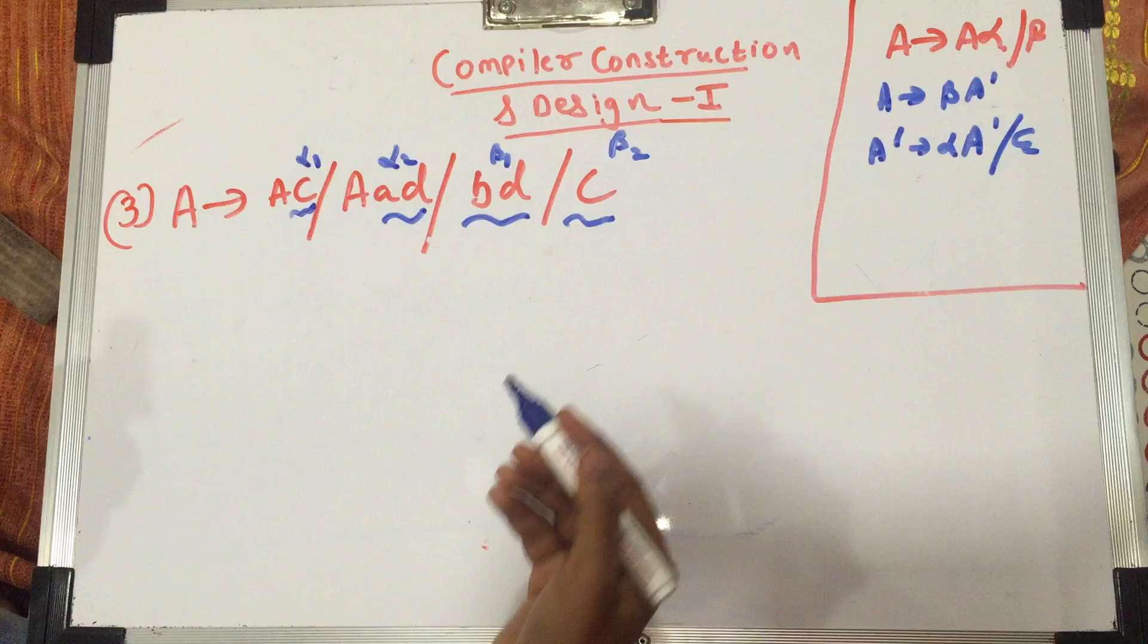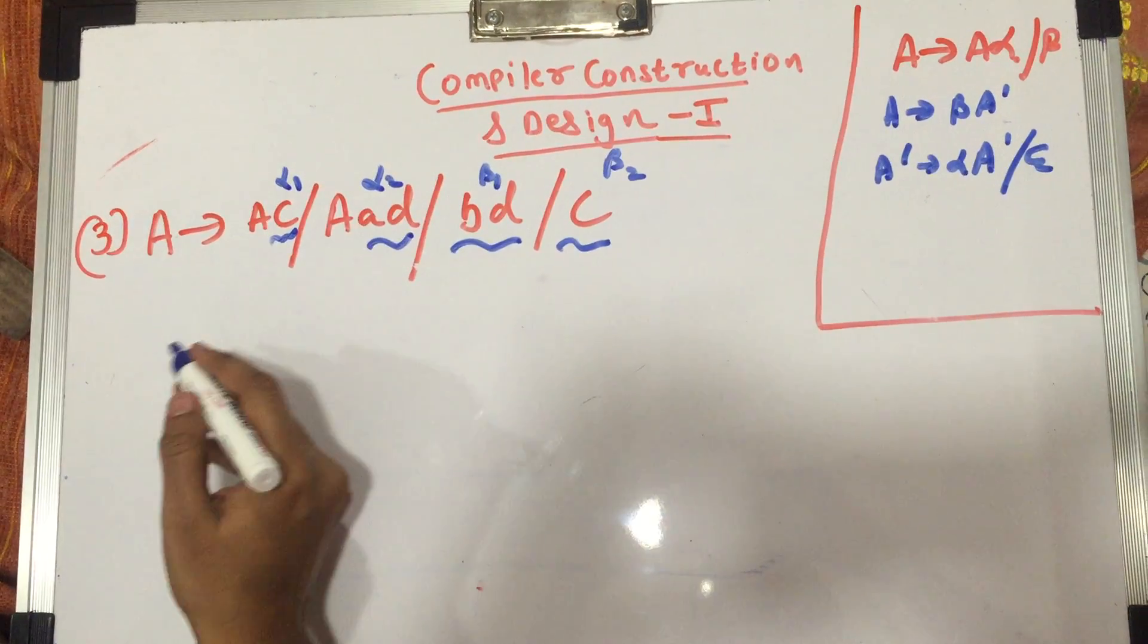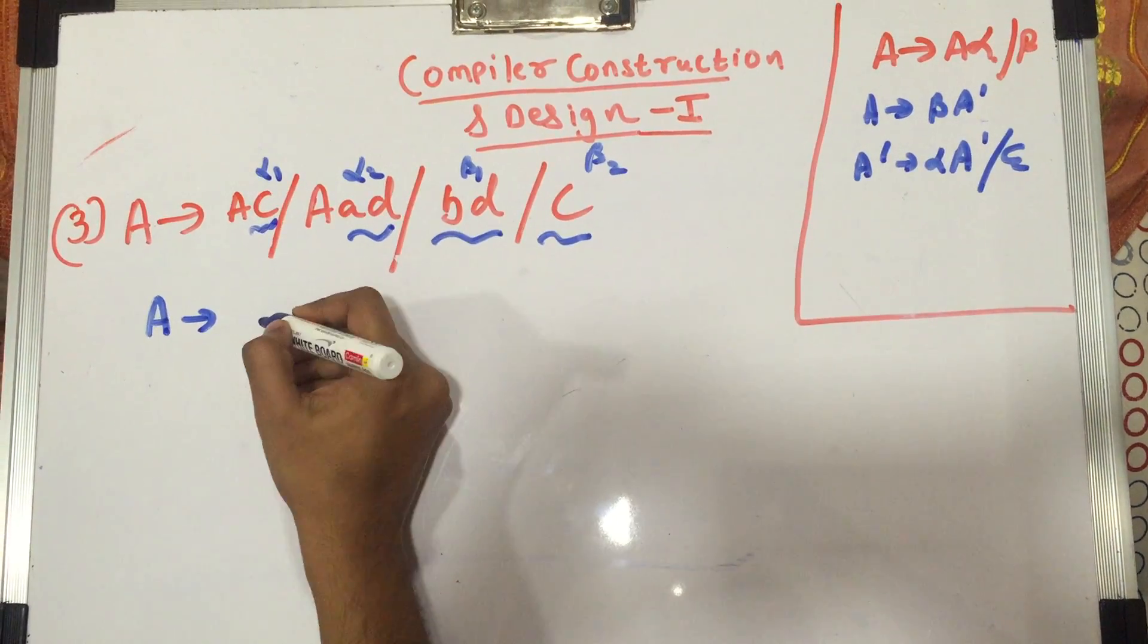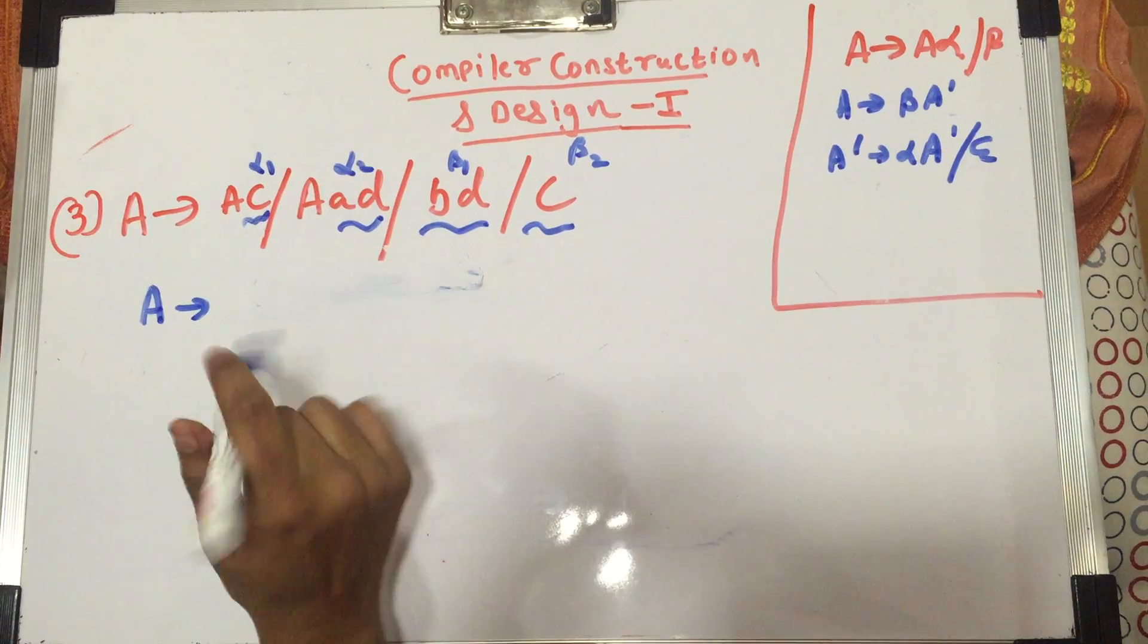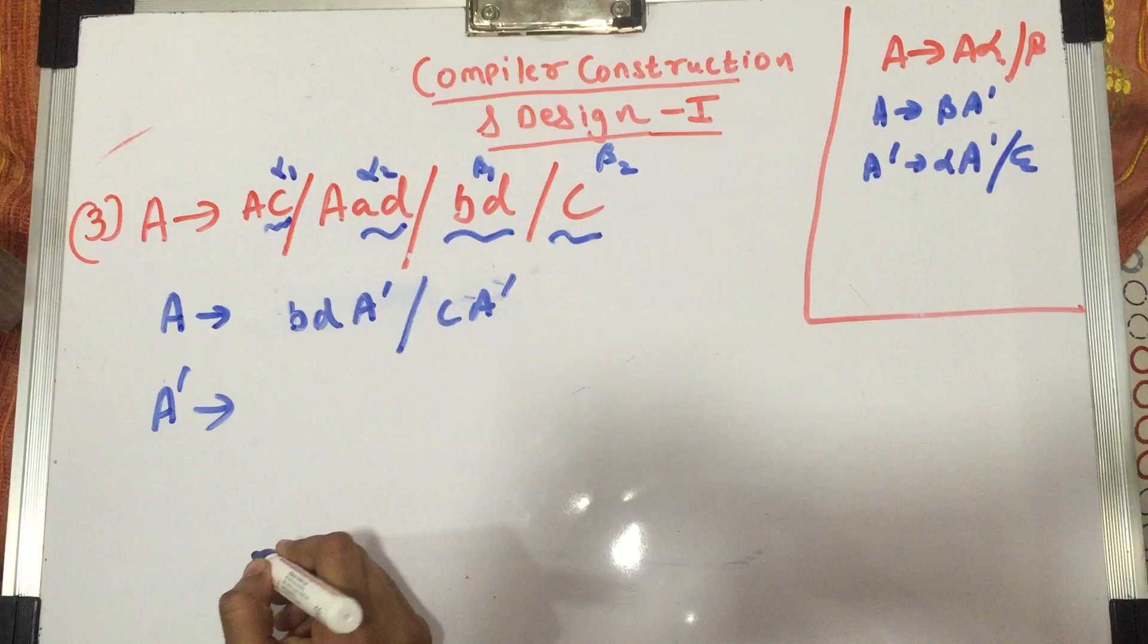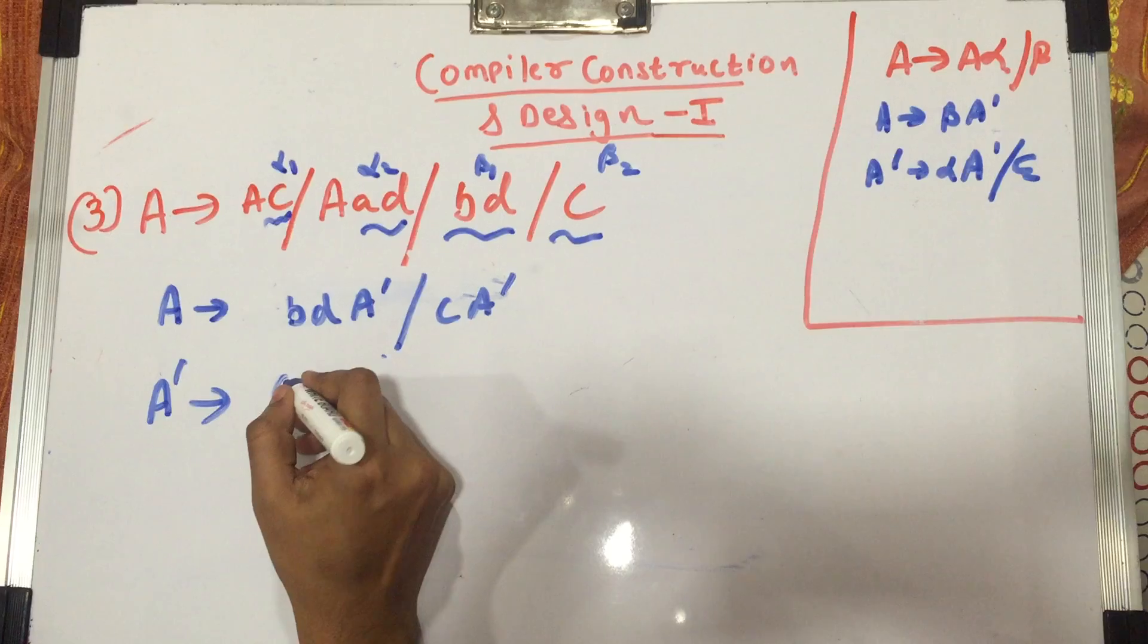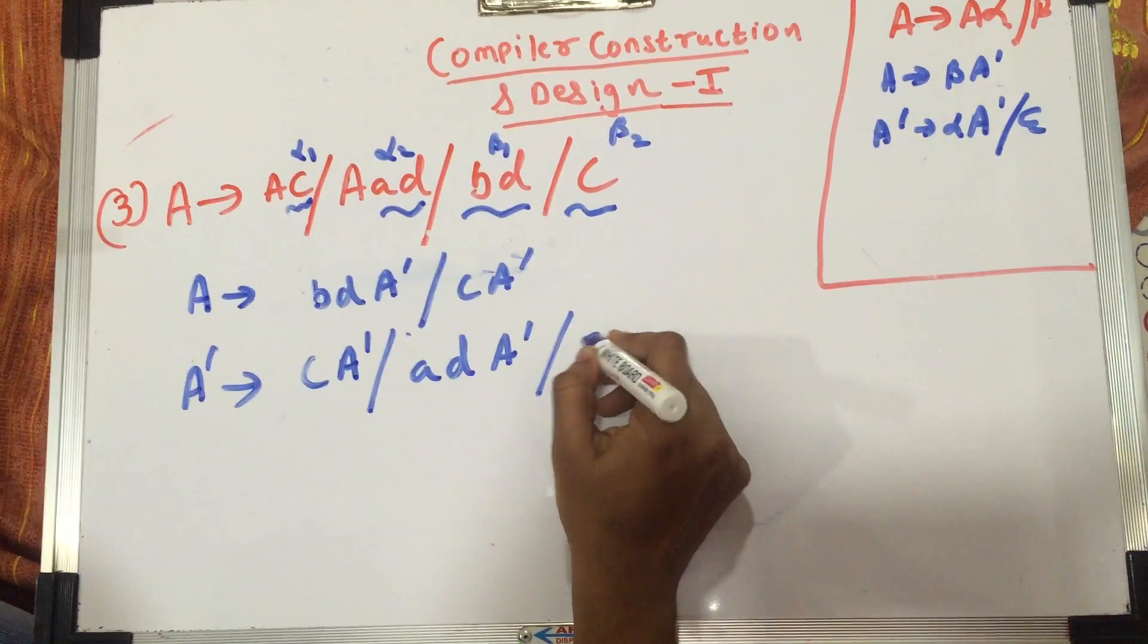So this is a small c, so it's basically a terminal. Whenever you have small letters, they are your terminals, and capital letters are your non-terminals. So again, diving into the question, we first write A gives me beta A dash, right? So I have now two betas, so I'm going to write beta 1 A dash and beta 2 A dash. So the A dash, so we have BD A dash and C A dash, and for A dash we have alpha A dash, right? So you write the rule is alpha A dash slash epsilon. So we have two alphas, so you're going to do it for both of them. So CA dash slash AD A dash slash epsilon.